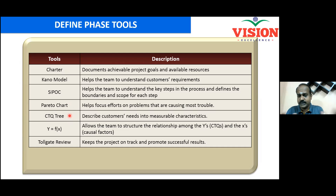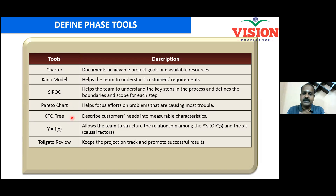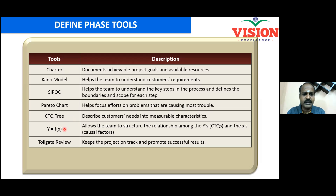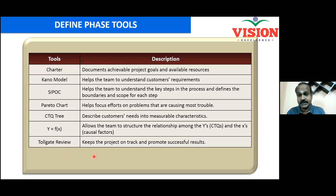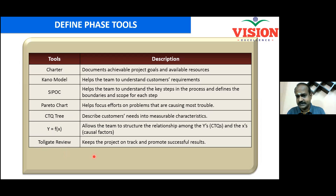The CTQ tree helps translate vague customer statements into measurable characteristics. When the child cries, you can't measure it directly — but when you understand it's the needle size causing the pain, you can measure it. Y = f(X) is the tool discussed yesterday: Y is the dependent variable, X is the independent variable. Toll gate review means at the end of every DMAIC phase, critical questions are asked to the Six Sigma team, and the team must convince management.